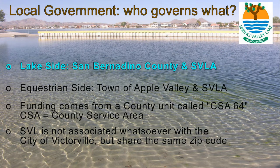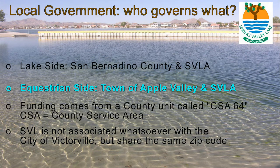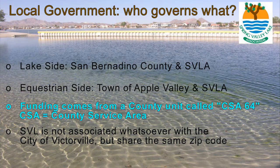The lake site of SVL is governed by San Bernardino County and RHOA. The equestrian site is governed by the town of Apple Valley, with funding coming from the county and RHOA. Funding for our services comes from a county unit known as CSA-64, which stands for County Service Area. Some of this funding also applies to the equestrian side because Apple Valley used to be part of the county until it seceded in 1987.